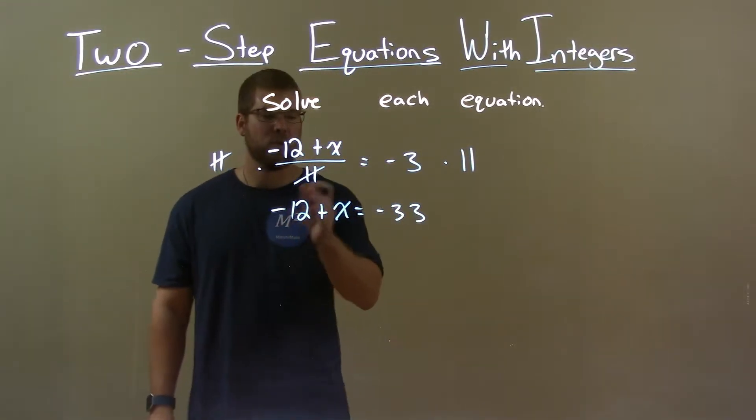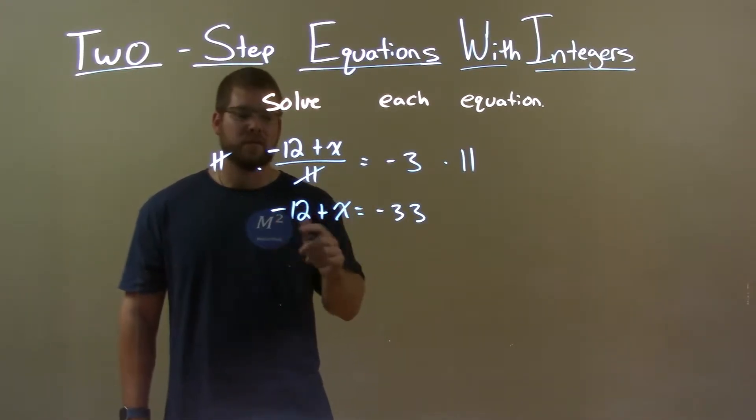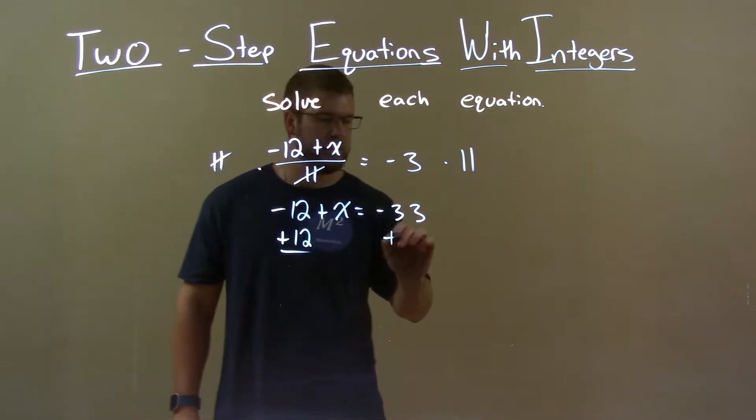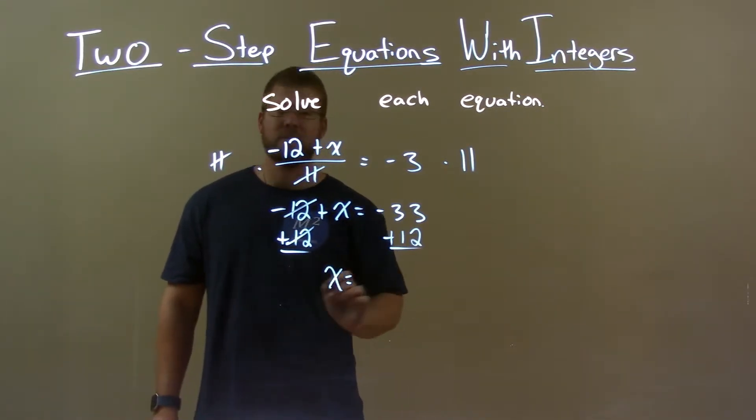We now have negative 12 plus x there. Opposite of that negative 12 is a positive 12. So if I add a 12 to both sides here, the 12's get eliminated, leaving me x by itself, which I want.